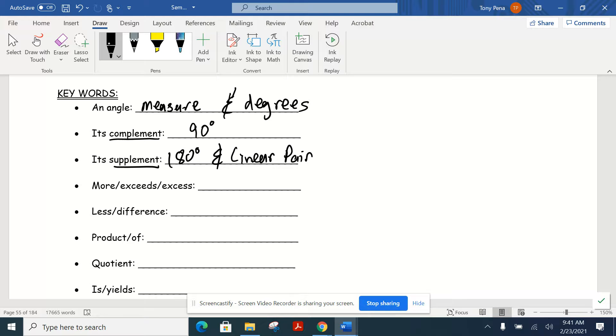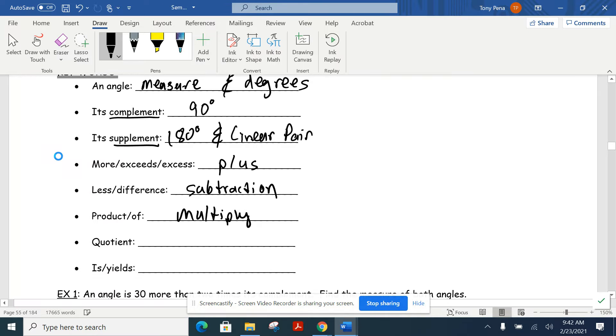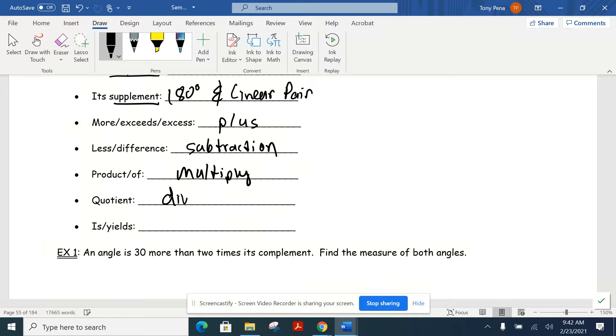More, exceeds, excess. When we do these little word problems, that generally translates into a plus. So if I have five more dollars than Achmed, then whatever Achmed has, I'm going to add five to it. When we start doing these little word problems, if you see it written as less than or a difference, that generally mathematically translates into the word subtraction. When we see the word products, this means multiply. Quotient is one maybe we're not quite as familiar with. That means divide. And then last but not least, when you see the word is or yields, almost always when we're dealing with these little word problems, it means equal to.